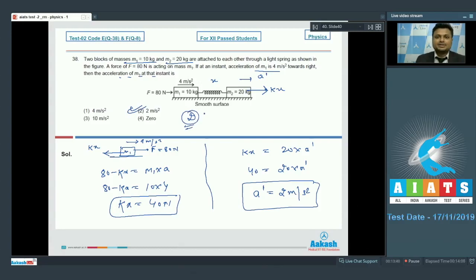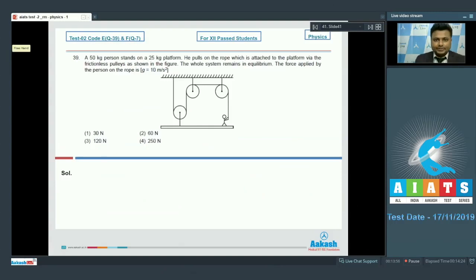Moving on to the next question, that is number 39. Here is number 39. A 50 kg person stands on 25 kg platform. He pulls on the rope which is attached to the platform via frictionless pulleys as shown in the figure. The whole system remains in equilibrium. The force applied by the person on the rope will be what? Take g equals to 10 meter per second squared.